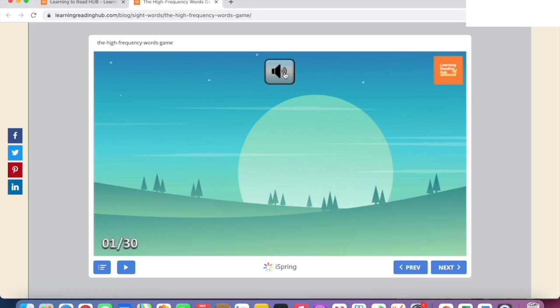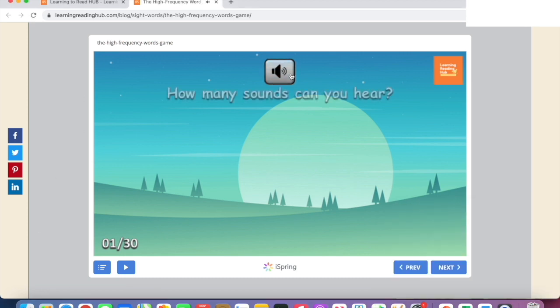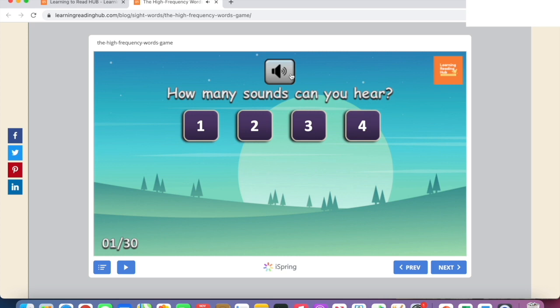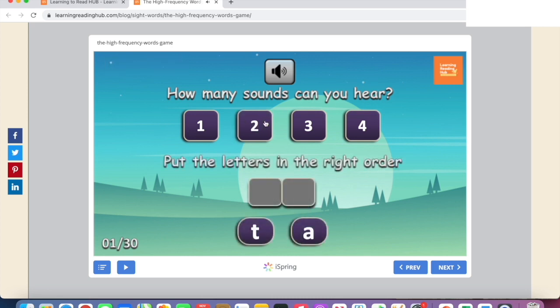First of all, we hear the question: how many sounds can you hear? We hear the high frequency word, and then we're asked how many sounds can we hear. In this case, two. Put the letters in the right order. Two boxes appear, and then we need to put the letters in the right order.